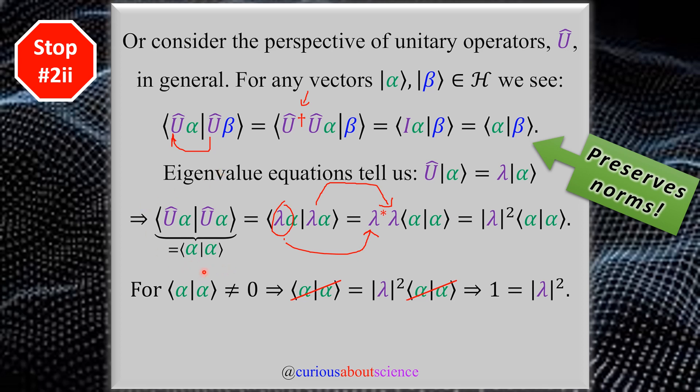But also note that the left hand side from right before it is equal to the inner product as well of just ⟨α|α⟩. So what we can say is that for the inner product of α, if it doesn't equal zero, these two sides cancel and we're left with 1 = |λ|². This tells us that the unit modulus of λ has to be one.